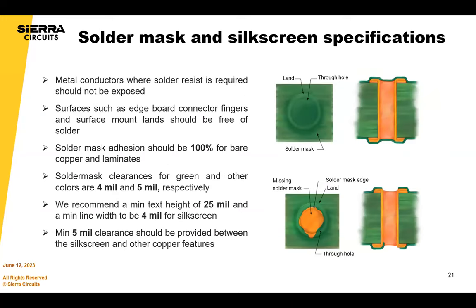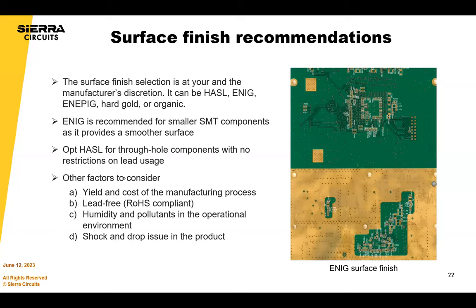For silkscreen, we use no-outgassing silkscreen ink and recommend a text height of 25 mils with a line width of 4 mils. Regarding surface finish, it really depends on your application and environment: ENIG has shown better adhesion of components to the board. ENIG and ENEPIG are good for large components and large BGAs to maintain flatness for assembly. For smaller or tighter-pitch components, go with ENIG or ENEPIG. Other factors for surface finish include yield, cost, and the environment in terms of shock and other exposures.